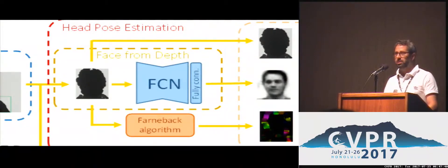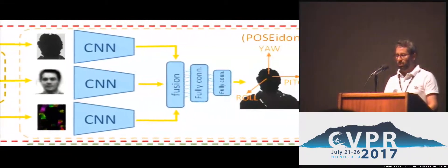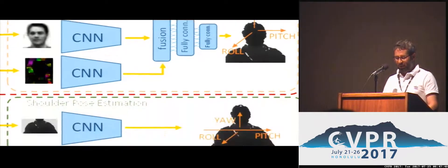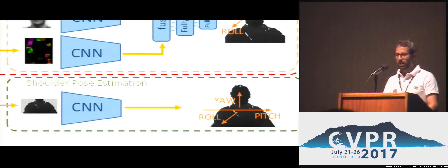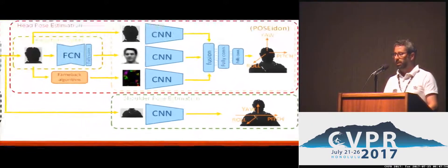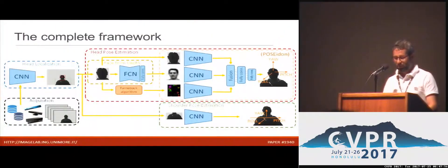Then we have an image preprocessing step, which includes the so-called Poseidon and the Face from Depth network. Both of them are used to process the data and to output the angles of the face and of the shoulders.